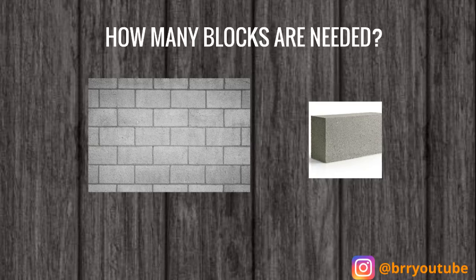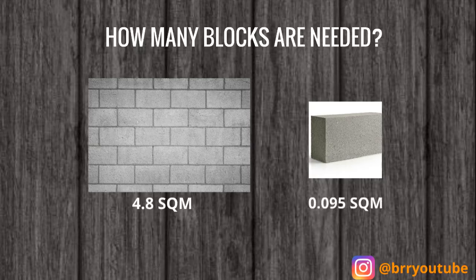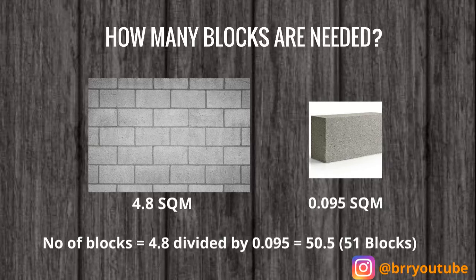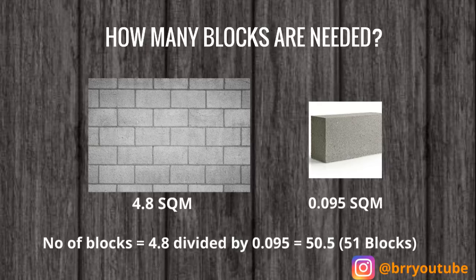Now we've got the size of the wall and the size of a block, we can calculate how many blocks we need. Our wall is 4.8 square meters and each block is 0.095 square meters, so we divide 4.8 by 0.095, which gives us 50.5 — so we round that up to 51 blocks. You should also allow some extra for breaks, awkward cuts, and wastage, but fitted perfectly you're looking at about 51 blocks.